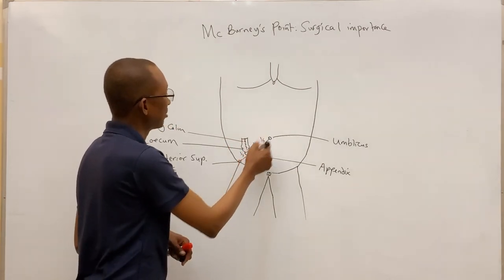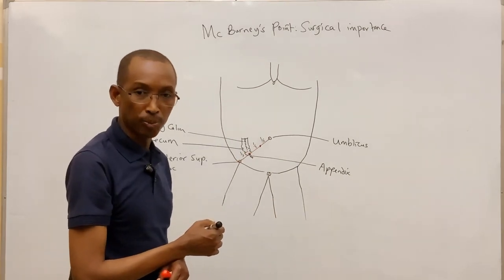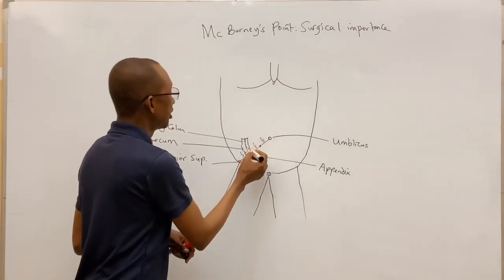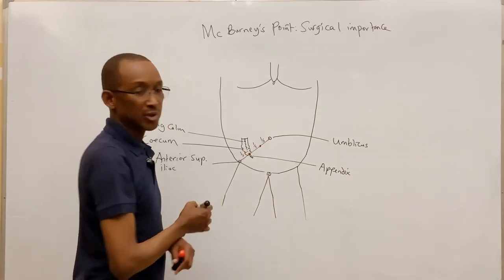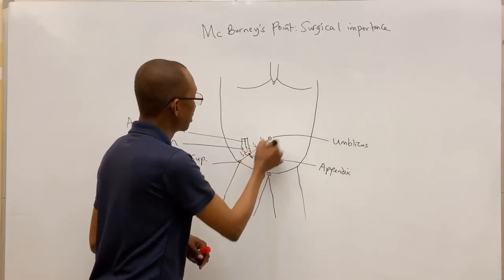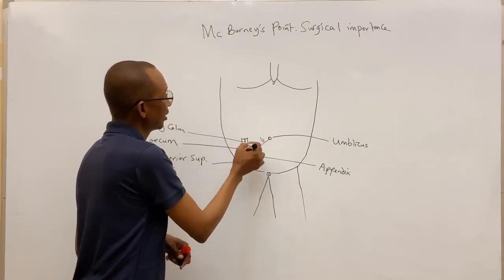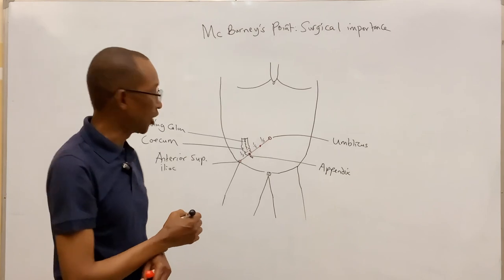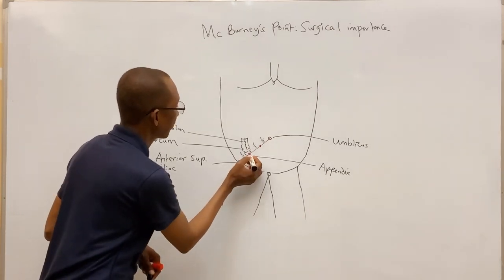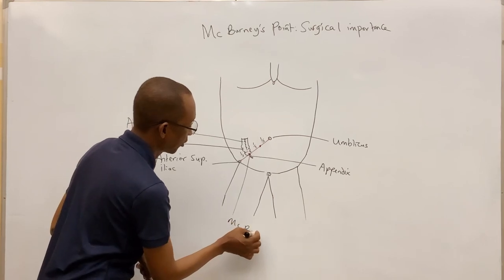When you divide this imaginary line into three equal portions, the junction between the middle two-thirds of this imaginary line and the lateral one-third, that is what we call McBurnie's point. So this point here is what we call McBurnie's point.